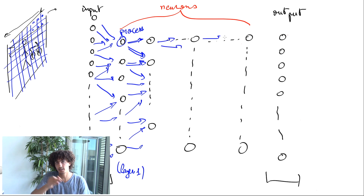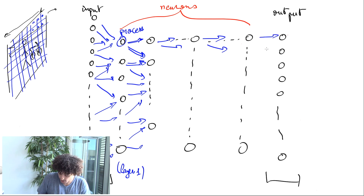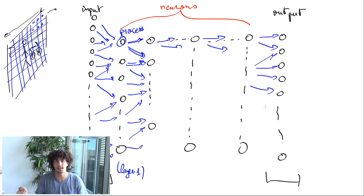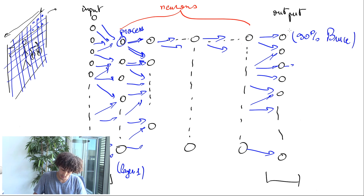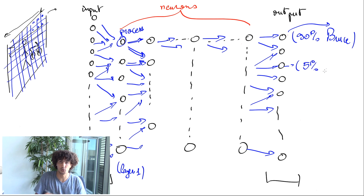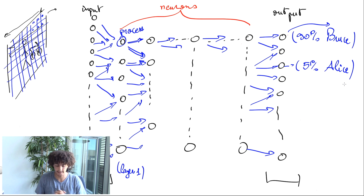So we have a series of broadcasts until we reach the output, where the final layer will say, 'I see a 90% chance that the photo contains Bruce,' then 'I see a 5% chance this photo contains Alice,' et cetera. So this is the schematic view.